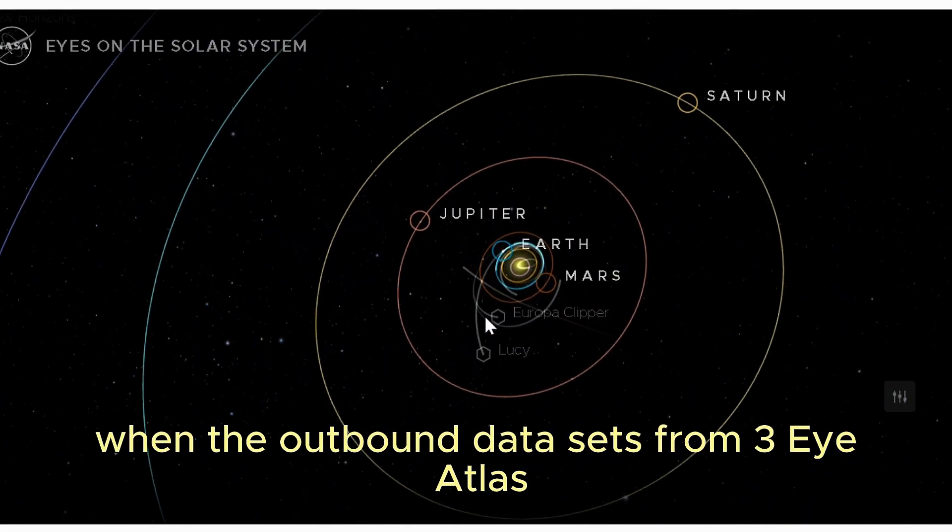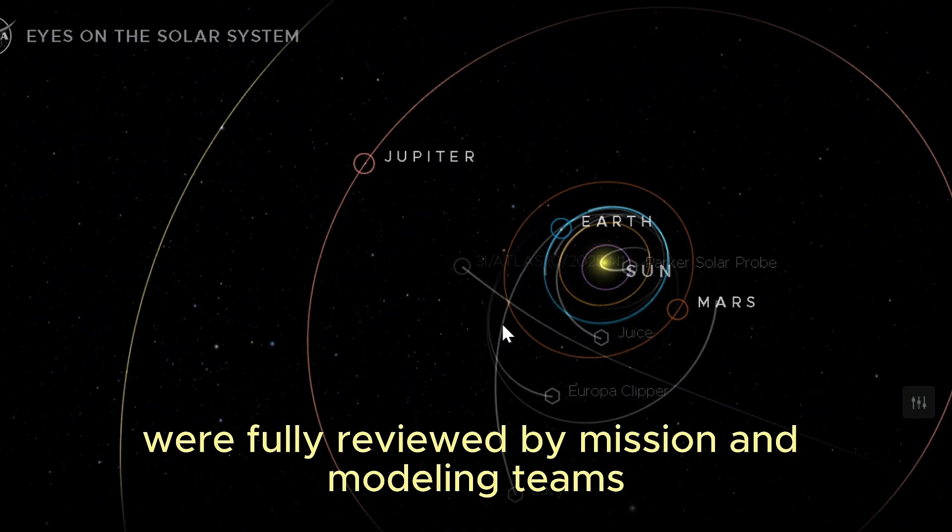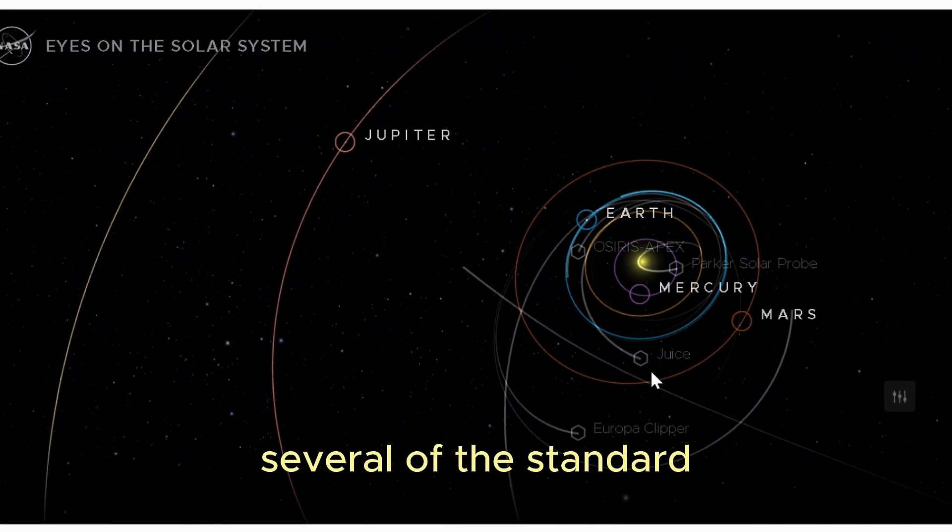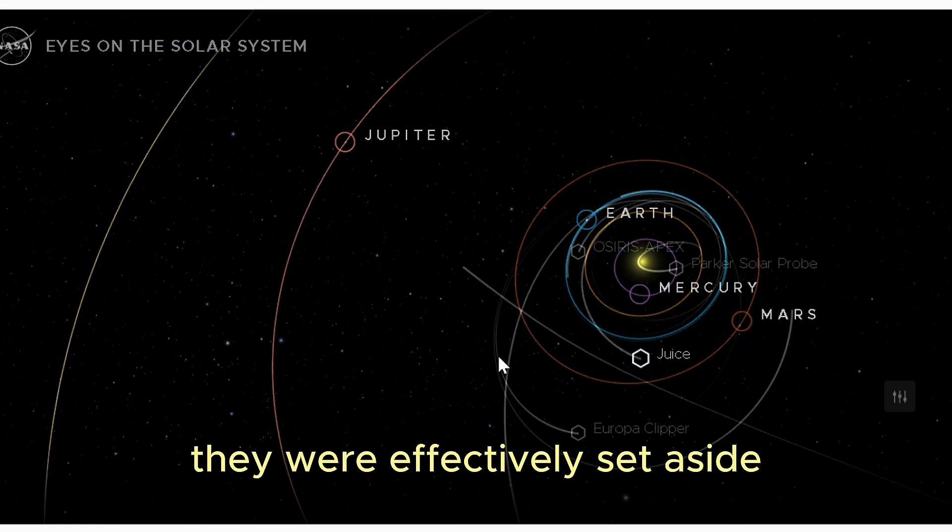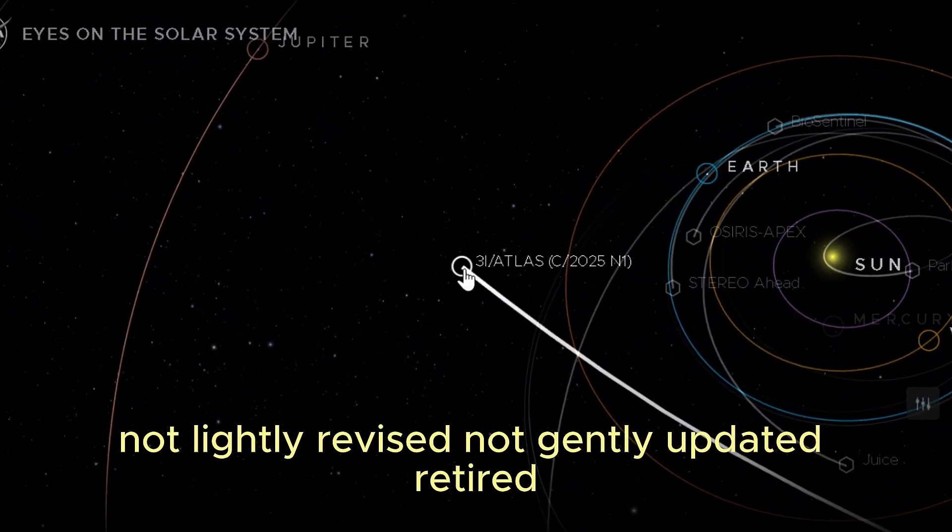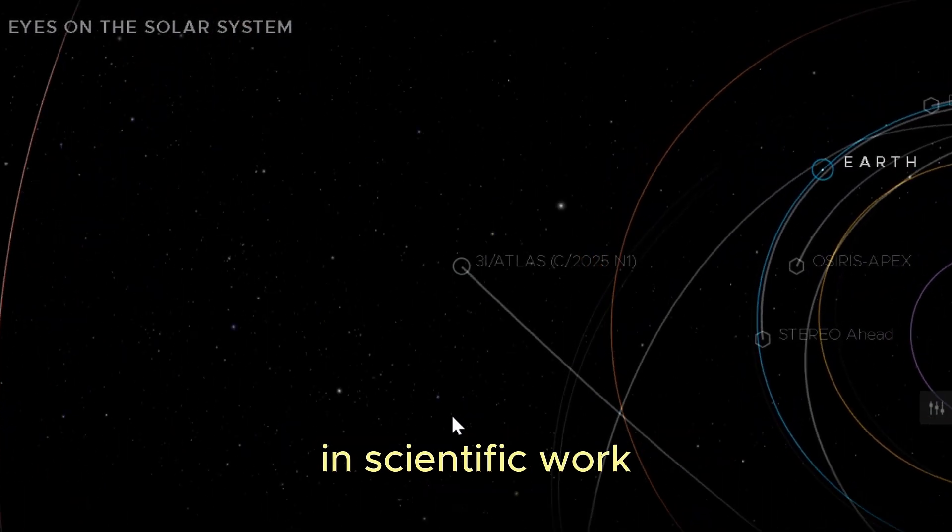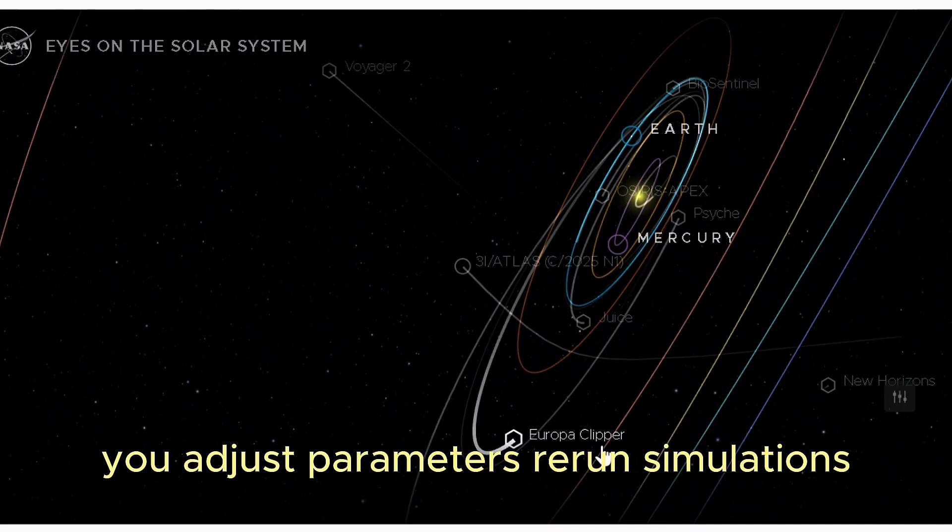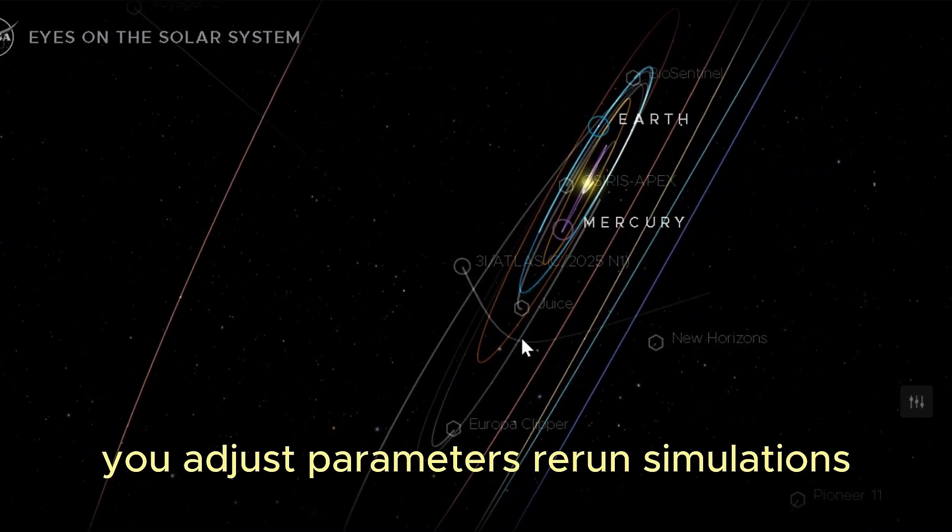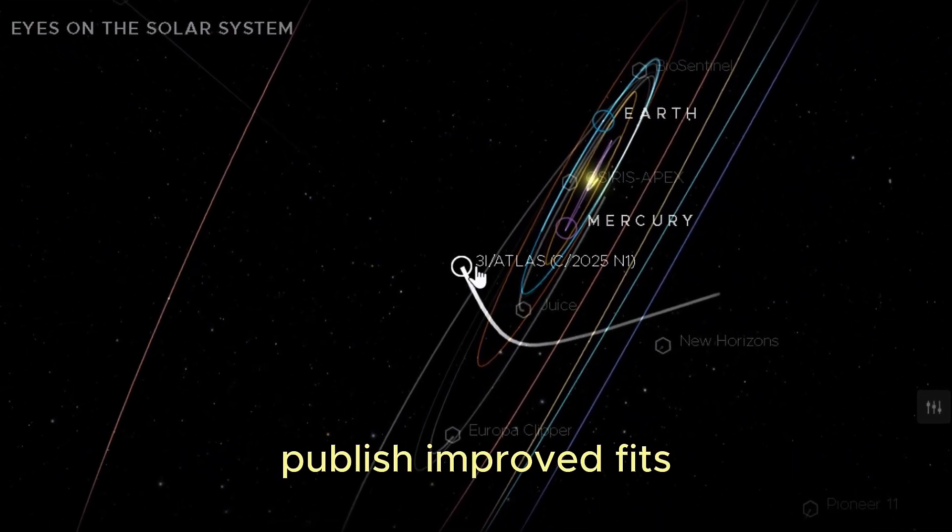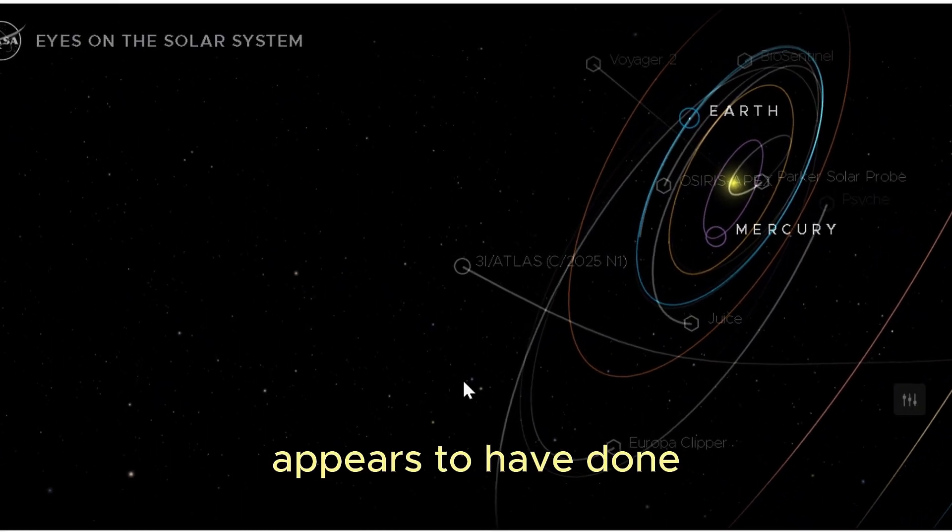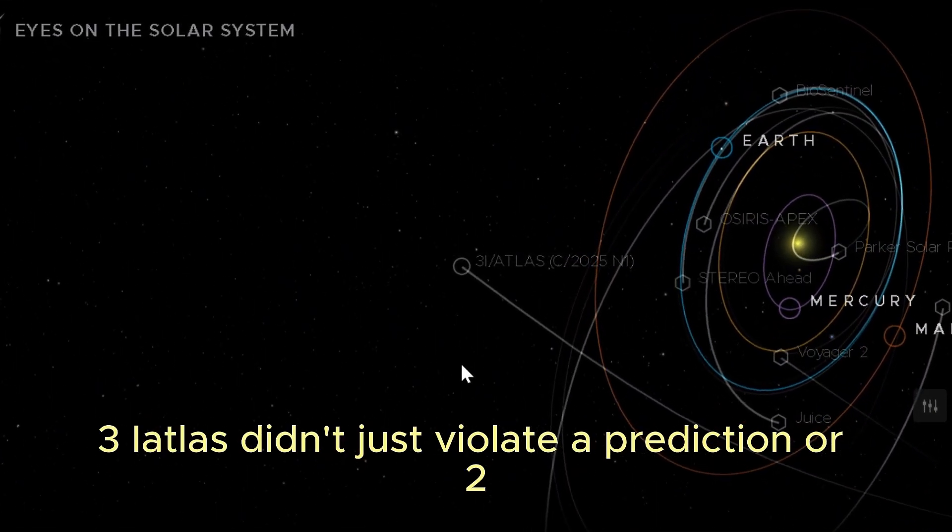When the outbound data sets from 3I Atlas were fully reviewed by mission and modeling teams, something highly unusual happened. Several of the standard internal models weren't just tweaked, they were effectively set aside. Not lightly revised, not gently updated. Retired. In scientific work, you expect models to be wrong in detail. You adjust parameters, rerun simulations, publish improved fits. You don't usually throw entire frameworks out unless they fail at a very basic level. That is what this outbound behavior appears to have done. 3I Atlas didn't just violate a prediction or two, it undermined some of the assumptions those predictions were built on.